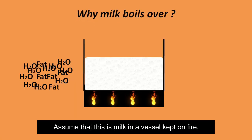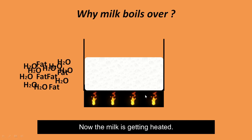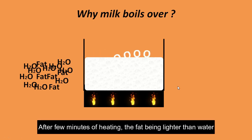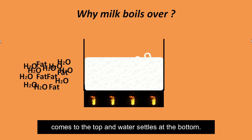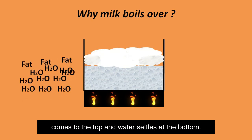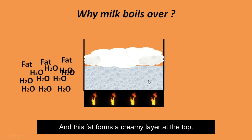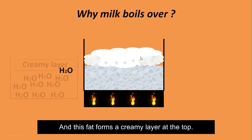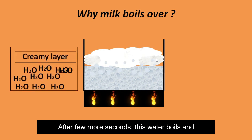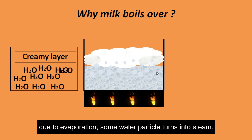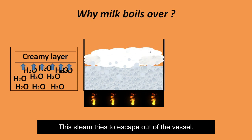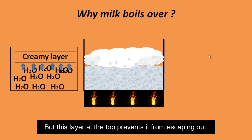Having said this, let us see what happens while boiling milk. Assume that this is milk in a vessel kept on fire. As the milk gets heated, the fat — being lighter than water — comes to the top, while the water settles at the bottom. This fat forms a creamy layer at the top. After a few more seconds, the water boils and due to evaporation some water particles turn into steam.